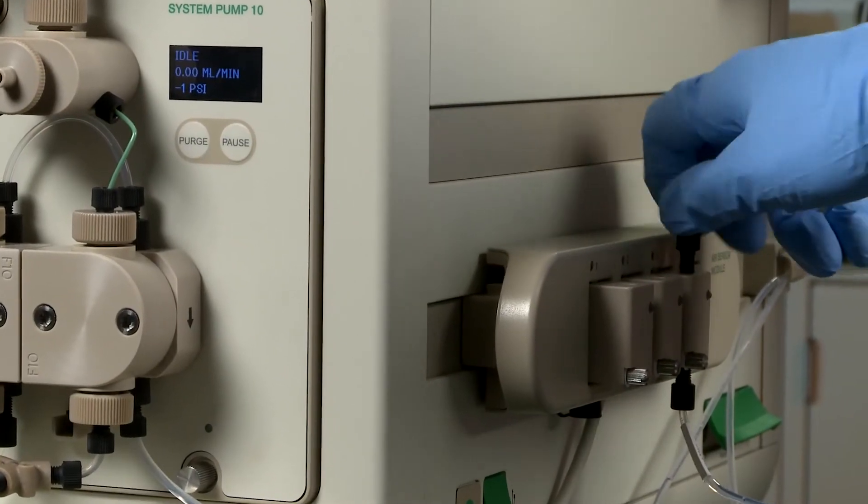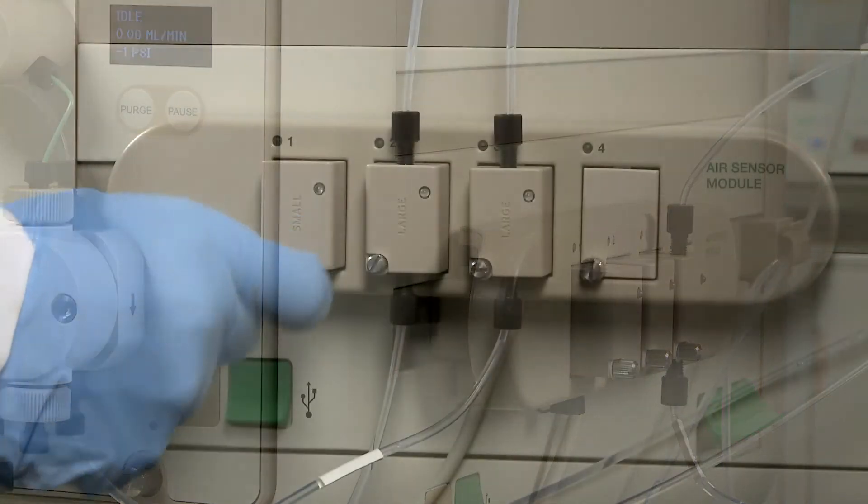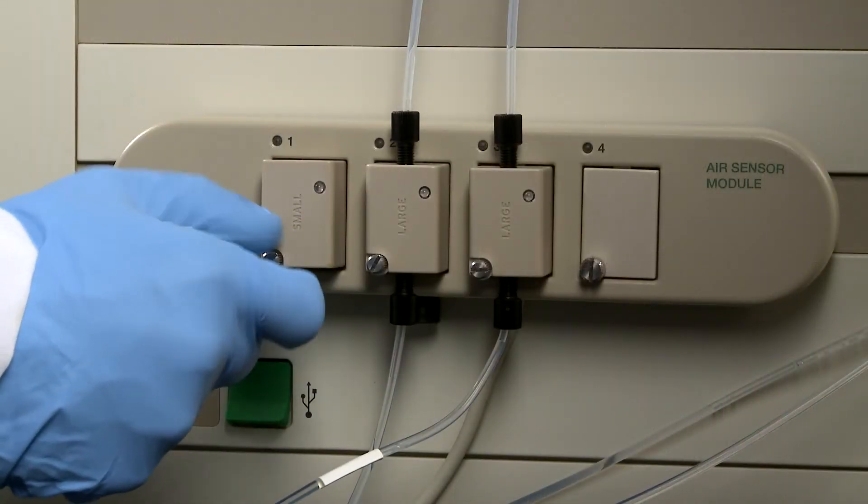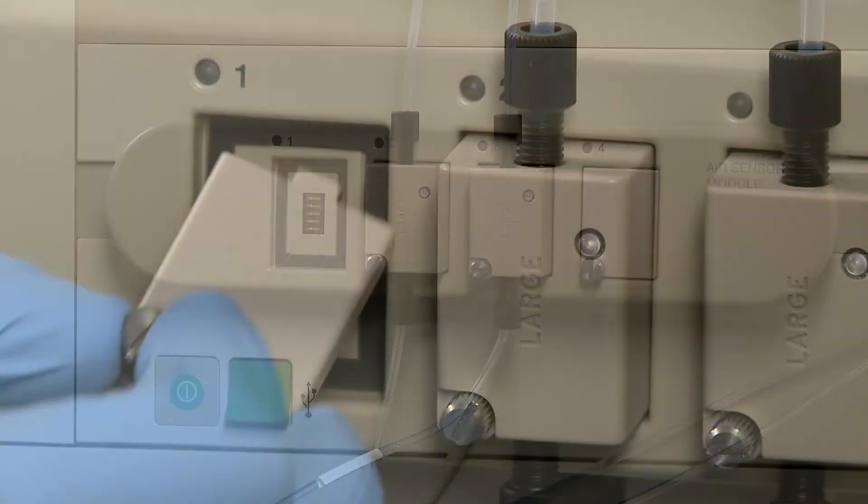Air sensors are plumbed directly in line for sample or buffer loading. Any air sensor that is not in use should be removed from the module and the empty connection bay should be covered.